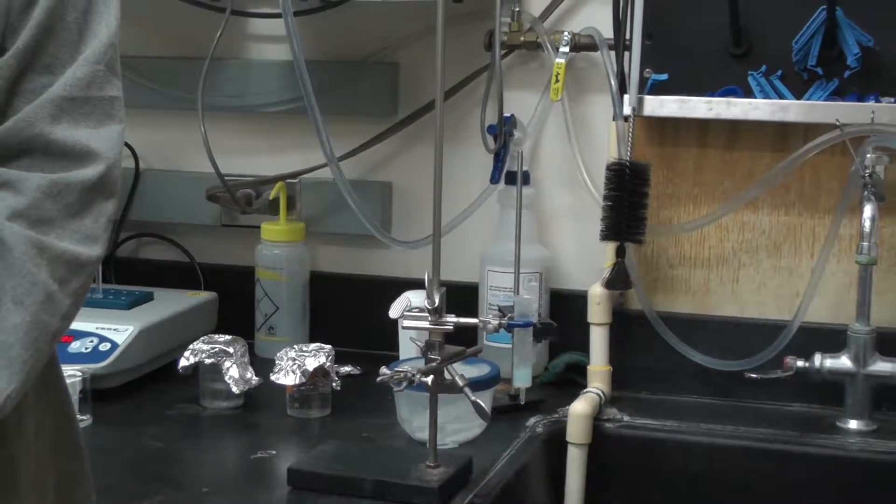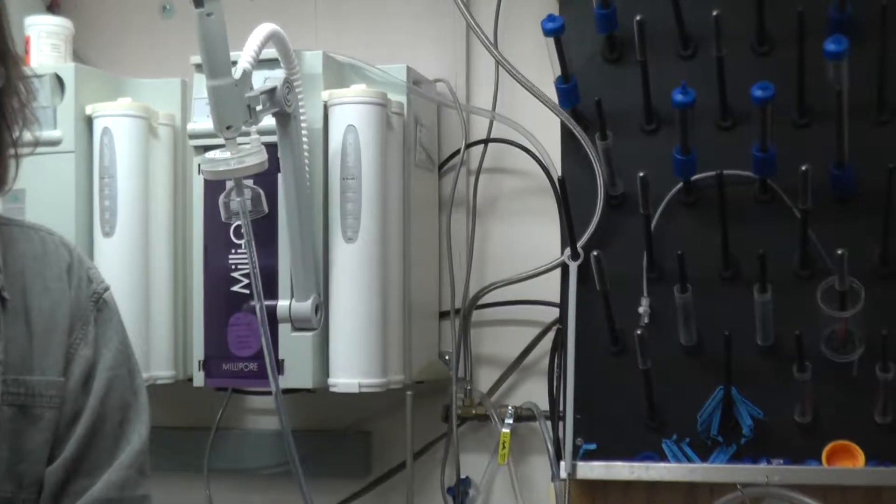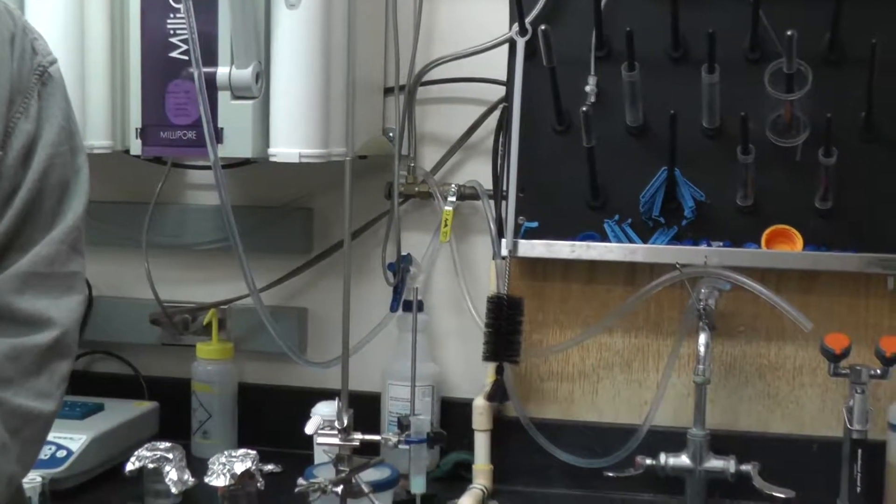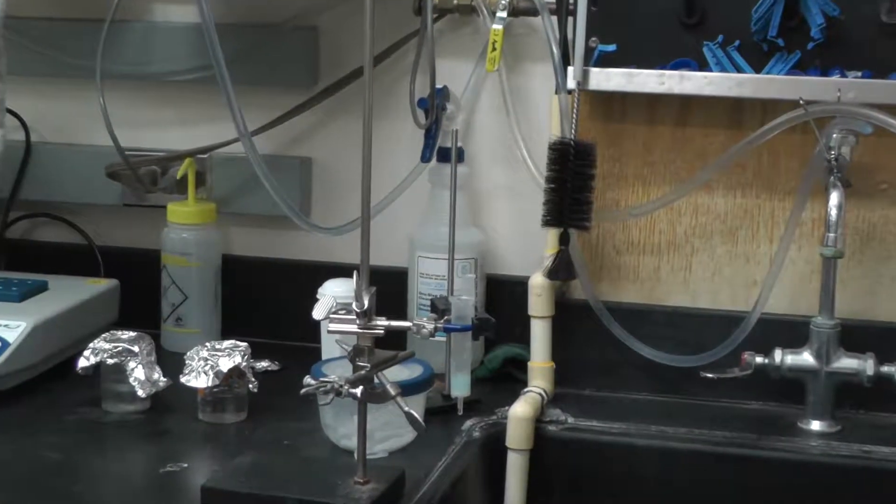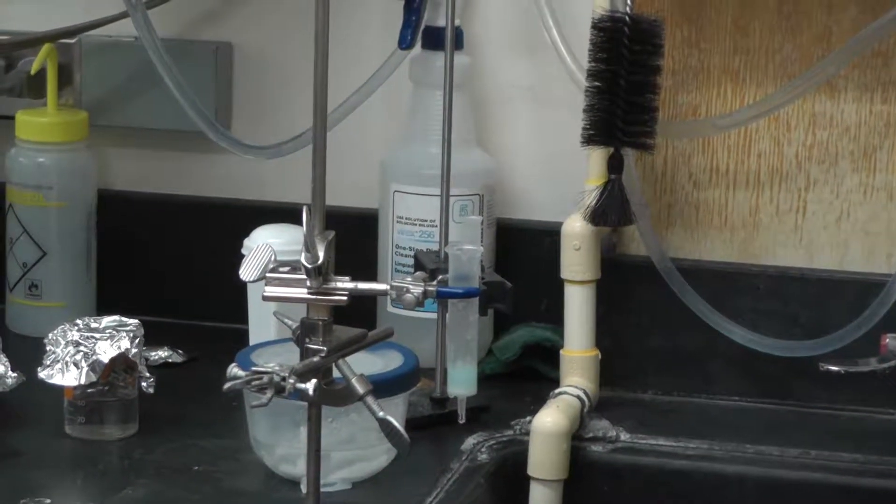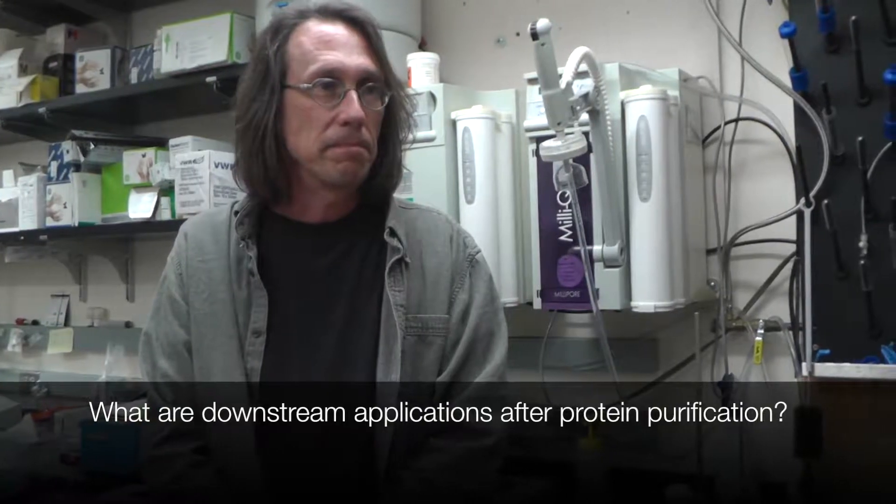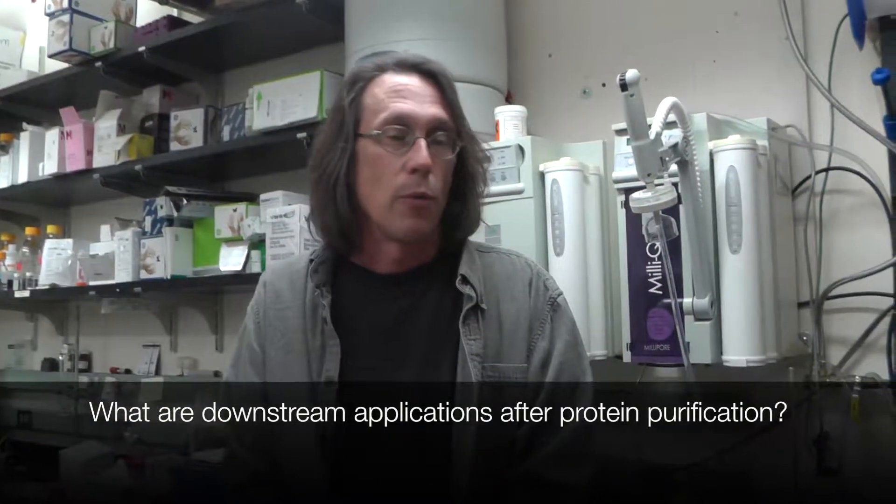Most of our work is just gravity flow columns, washing by hand, and eluting in imidazole solutions. Imidazole to sort of release the six histidine from the nickel NTA. Once we've purified the protein, we label it with fluorescent dyes and then we construct different experiments in a fluorescence microscope where we look at interactions of these proteins with DNA substrates.